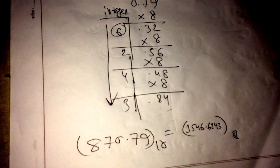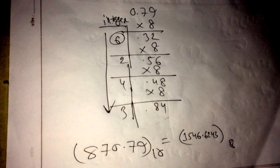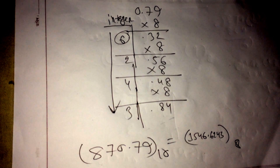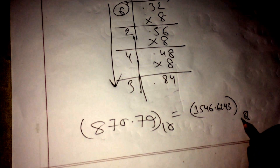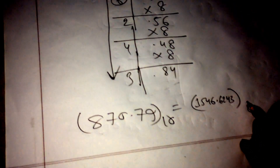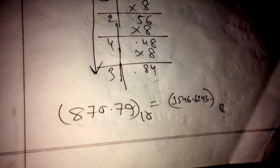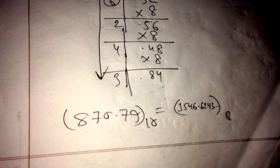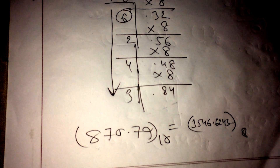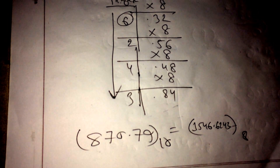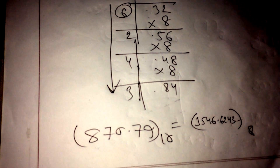The fraction portion is not finished — it is a continuous process. We did four iterations; if you continue, the number increases but never stops. So we put a dot to indicate it continues. This is our easy method to convert decimal to octal. Thank you very much, keep watching.